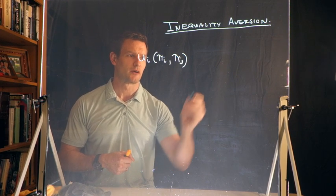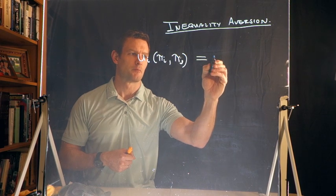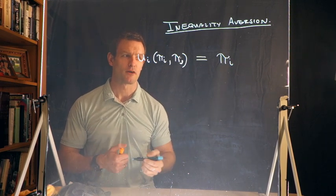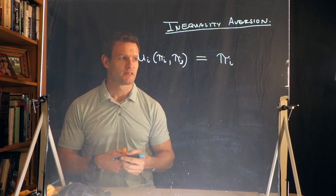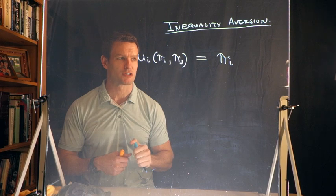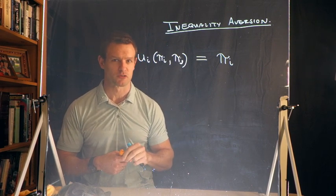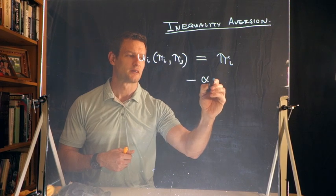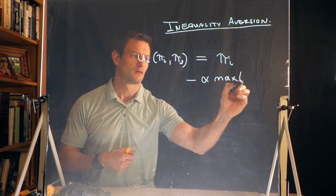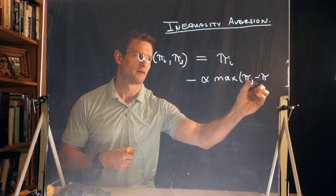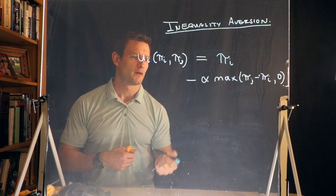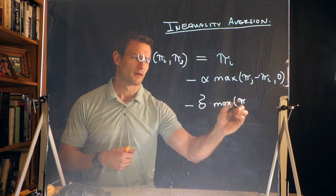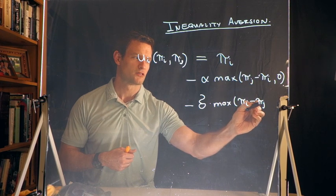Okay, so here are the two things that we're going to want to think about. Firstly, this is composed of three elements. The first one is π_i, the payoff that I receive in a given interaction - say some amount of money that I receive. However, we're going to subtract two different terms from this. The first term is minus α times max(π_j - π_i, 0), and then also minus δ times max(π_i - π_j, 0).